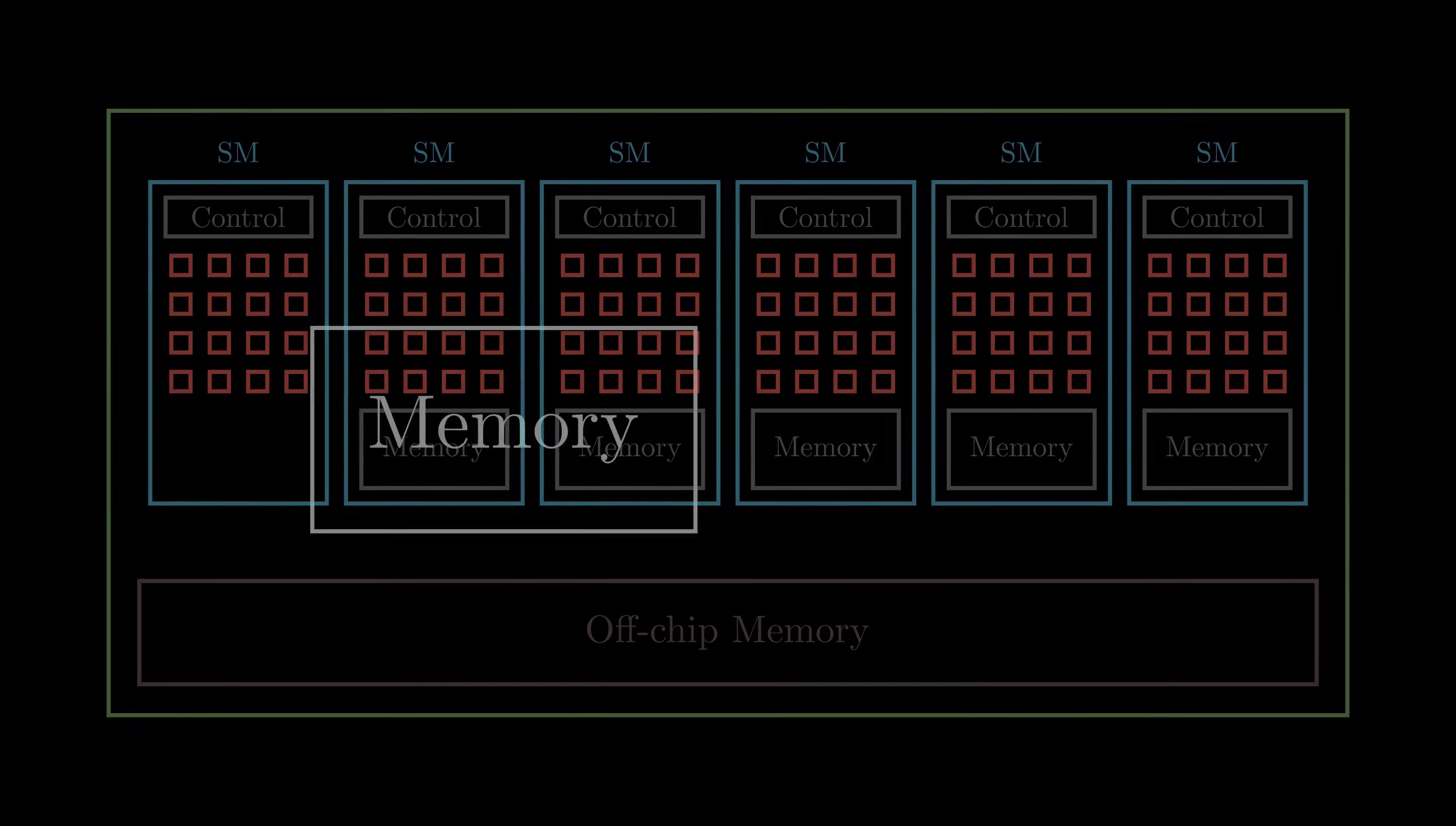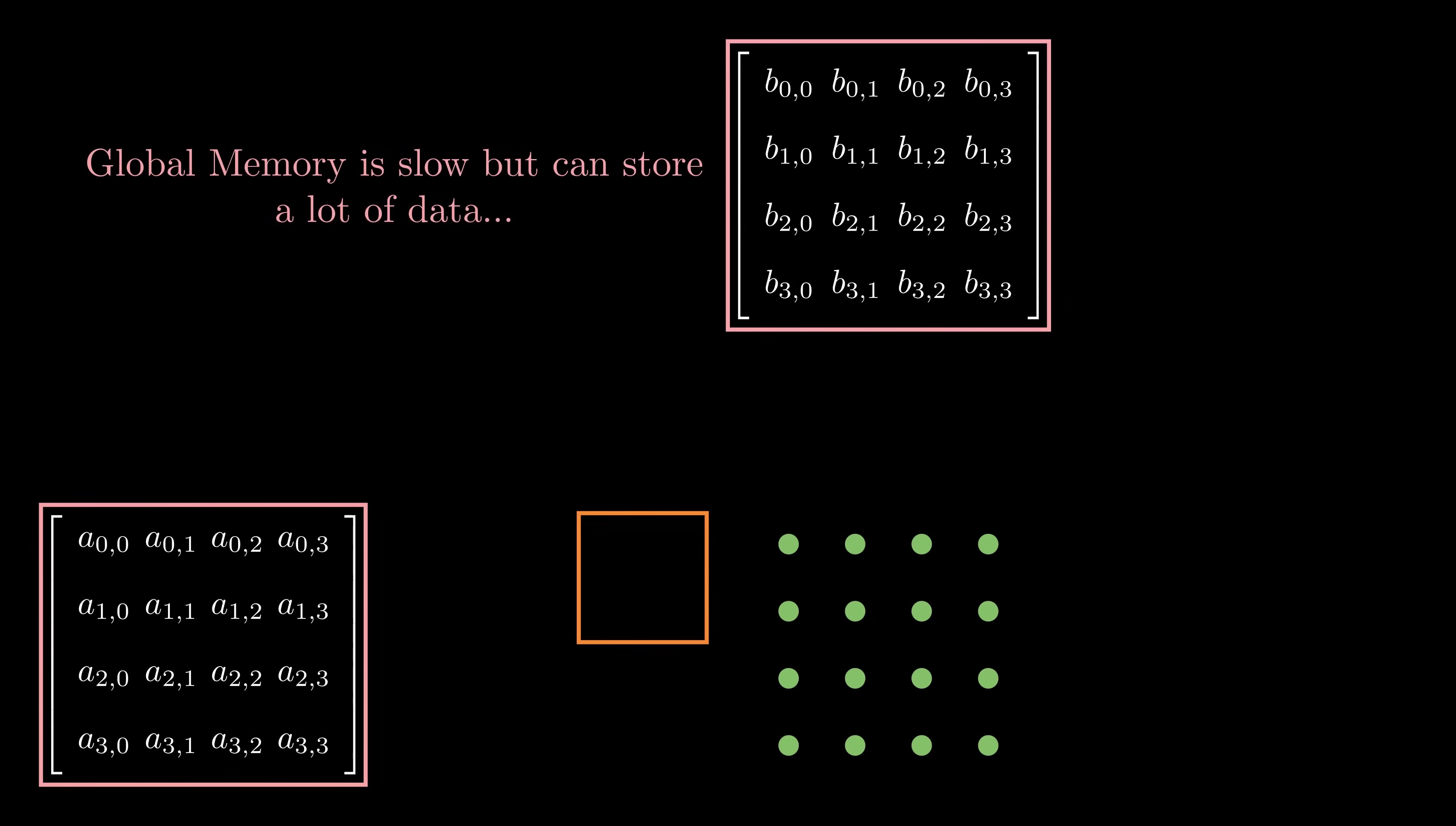Looking back at the GPU hardware, shared memory is one component of the on-chip memory unit. This is a big deal because accessing data from it is quite fast. Let's use shared memory for a simple 4x4 matrix multiplication. The input matrices are stored in the global memory because it can handle large amounts of data. Shared memory on the other hand cannot hold all the matrices at once.